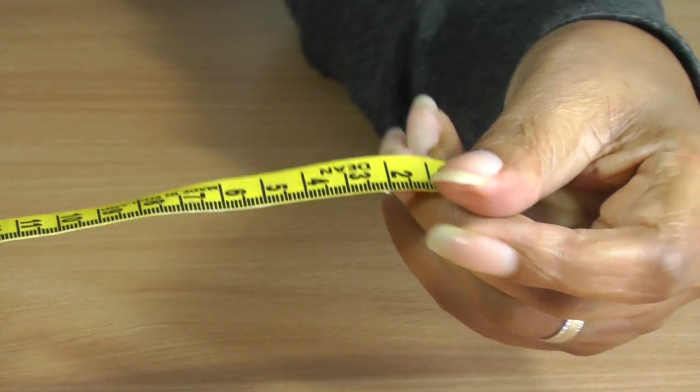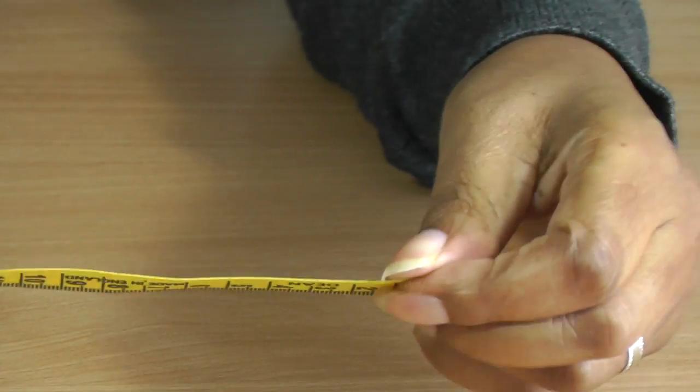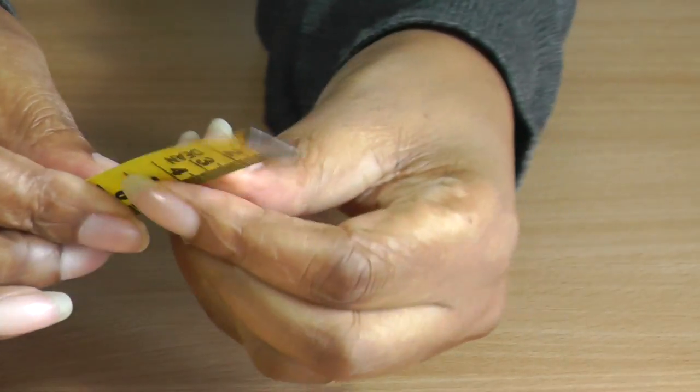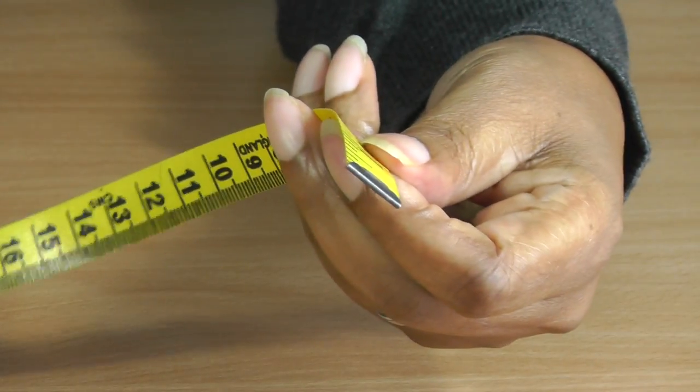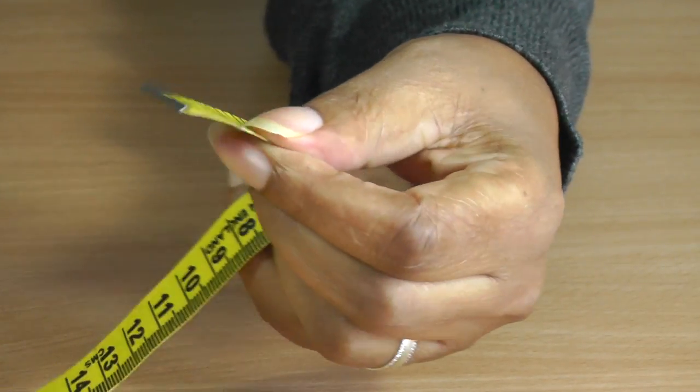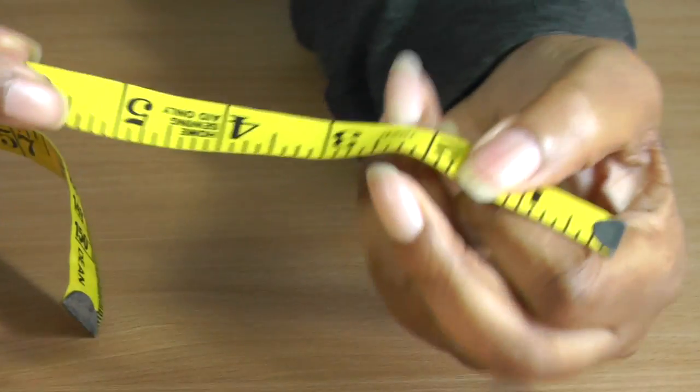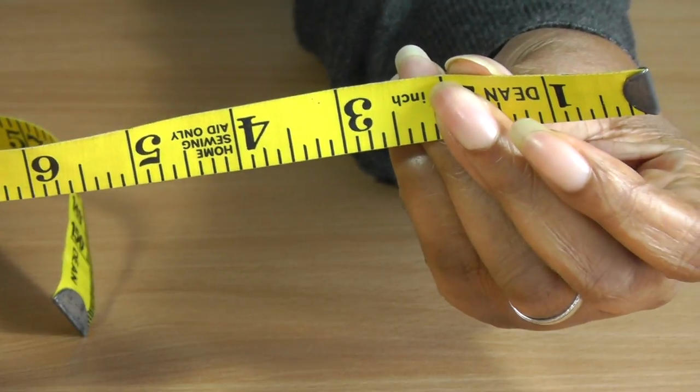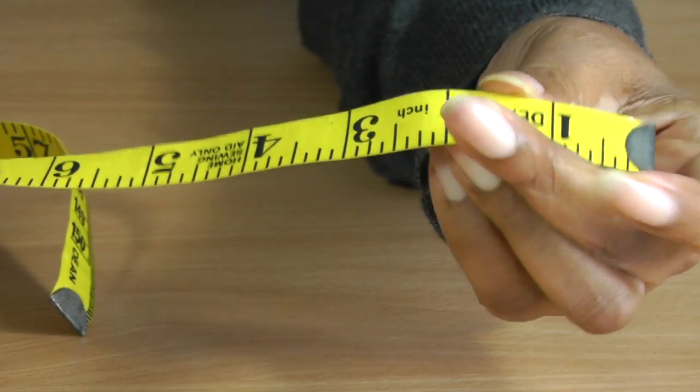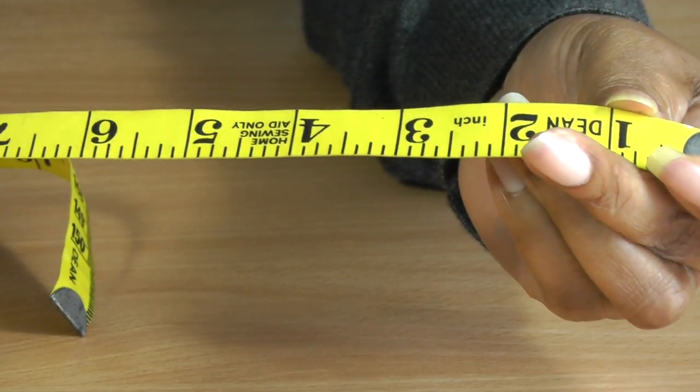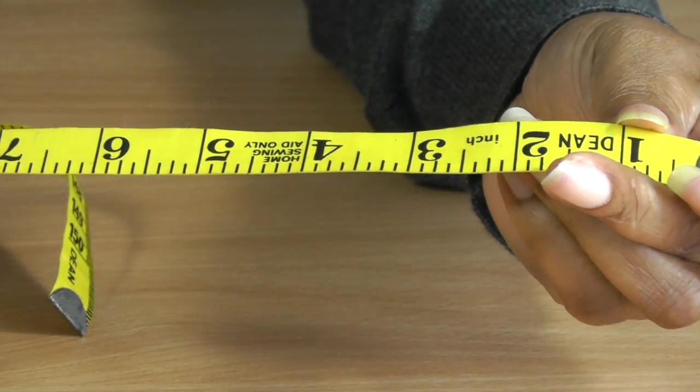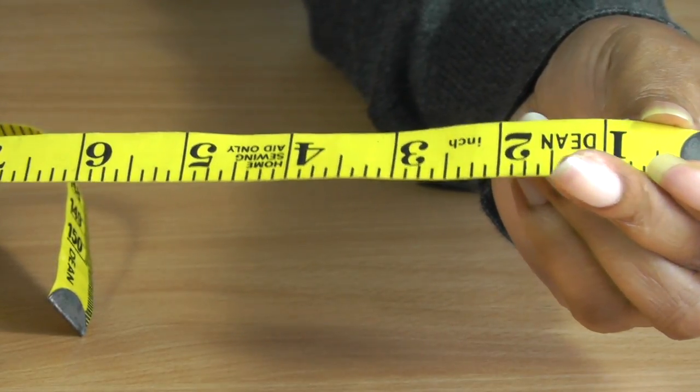So the tape measure has two sides and there are tabs at each end which you use as markers. It has inches and also centimeters. It goes from 0 to 60 inches and from 0 to 150 centimeters.